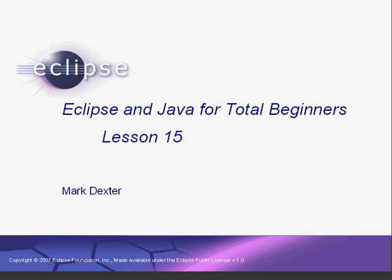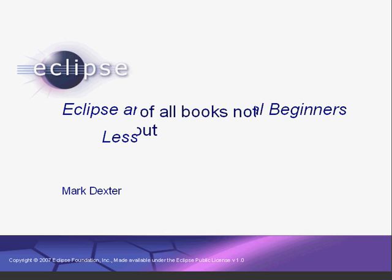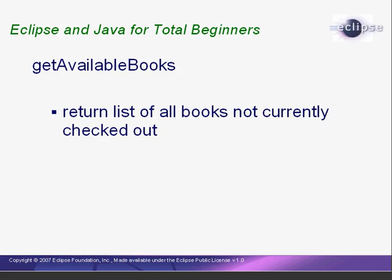Hello again. Welcome back to Eclipse and Java for Total Beginners. Congratulations, we're almost done. We have a few more methods to write to complete our MyLibrary class. The first two are fairly simple and very similar. Let's work on the getAvailableBooks first. This method will return a list of all books that are not currently checked out.